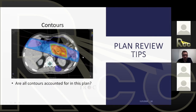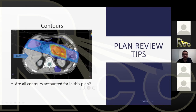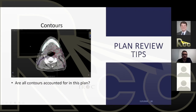For example, here are all the contours of a plan. You have beam arrangement, high dose region, kidneys, spinal cord, stomach — but it looks like the liver is missing. That would be a good example of a missed contour, and it's going to receive significant dose, so you need to report the dose to it.